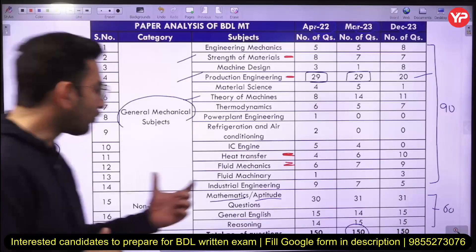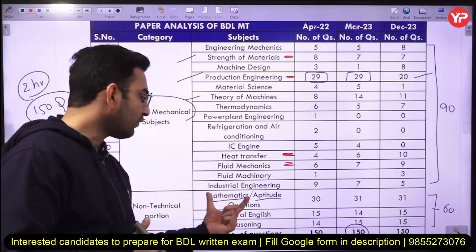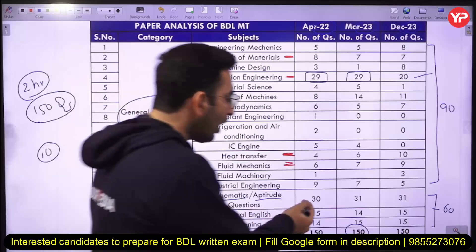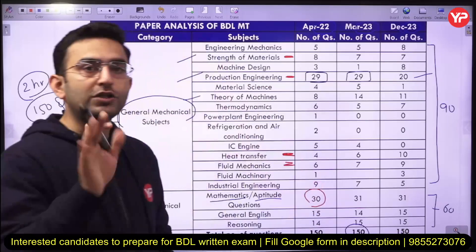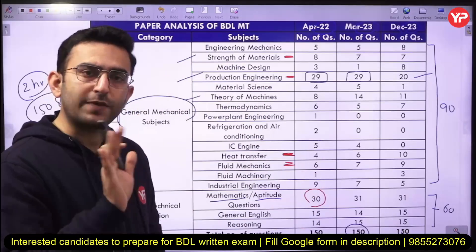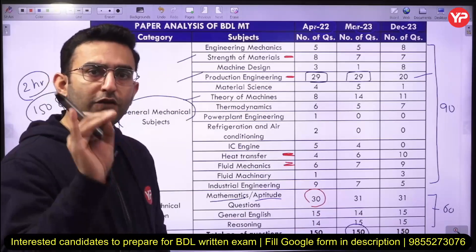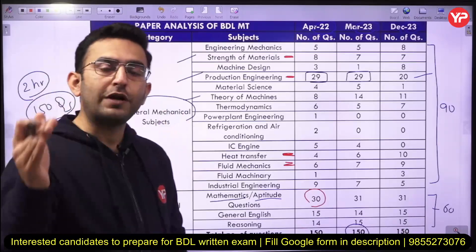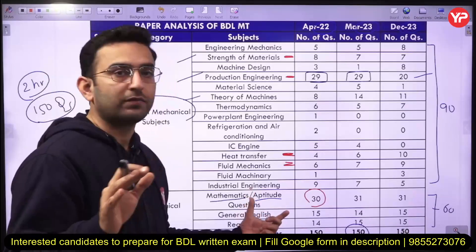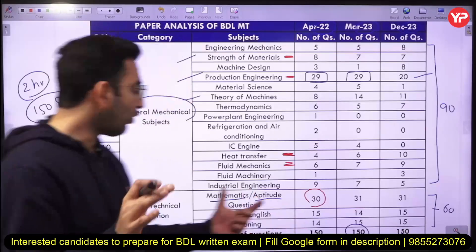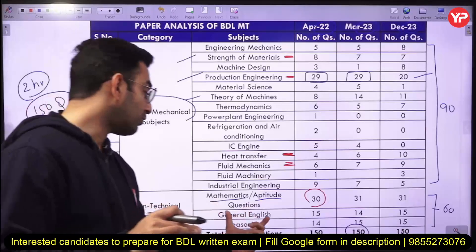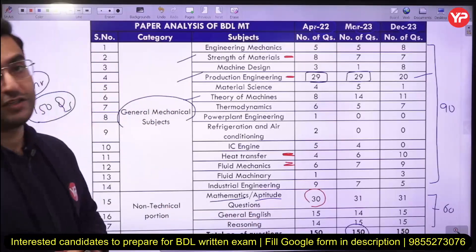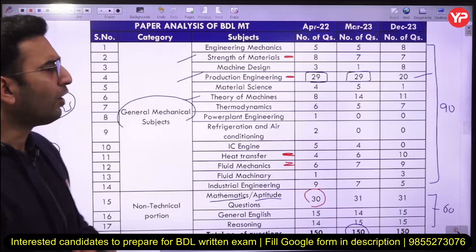The total number of non-technical questions are around 30 — out of these, 10 to 15 are from engineering mathematics specifically from differential, calculus, and matrix, and the remaining 15 to 20 questions are directly from the aptitude part. There is also a general English part and a reasoning portion.